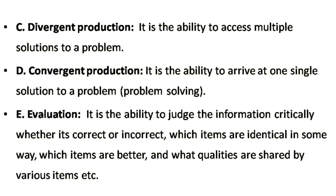Divergent production is the ability to generate multiple solutions to a problem. Convergent production is the ability to arrive at one single solution to a problem. Evaluation is the ability to judge information critically — whether it is correct or incorrect, which items are identical in some ways, which items are better, or what qualities are shared by various items.